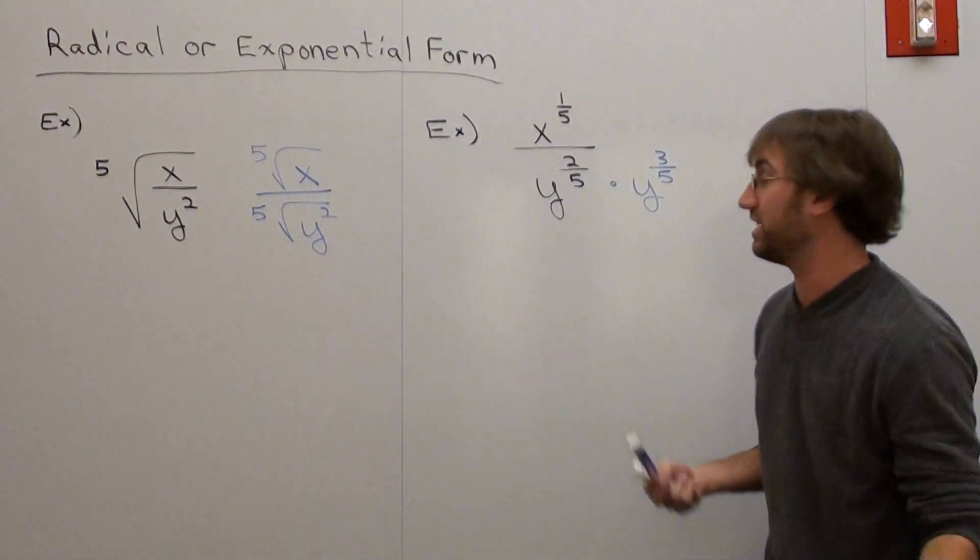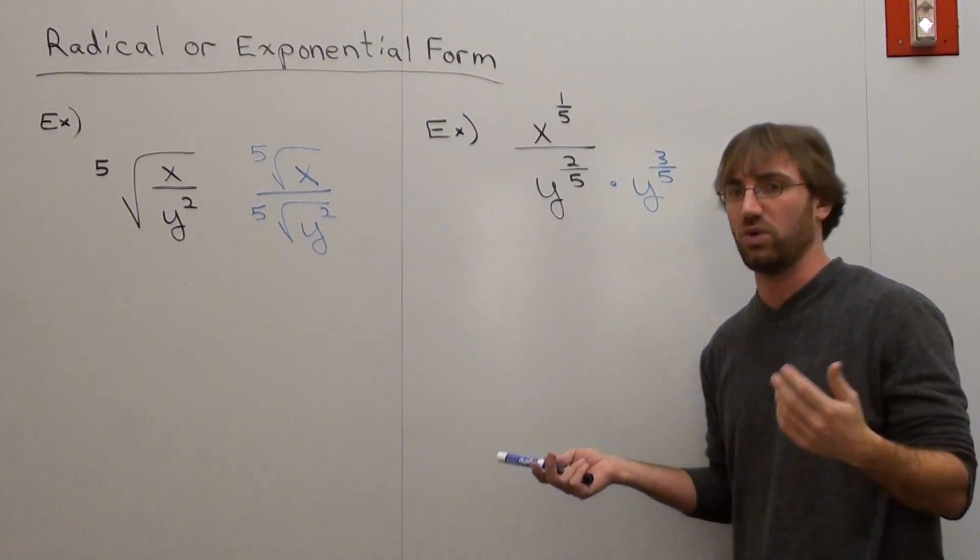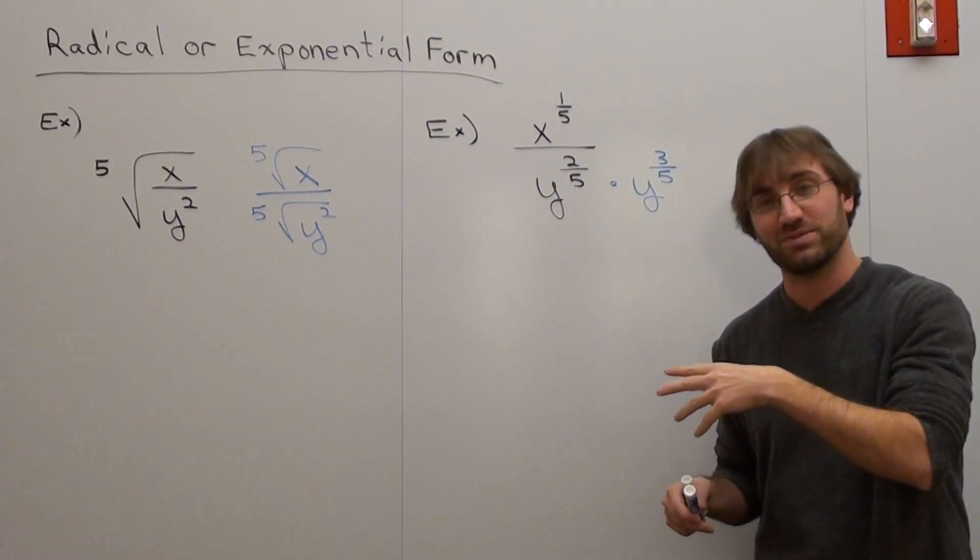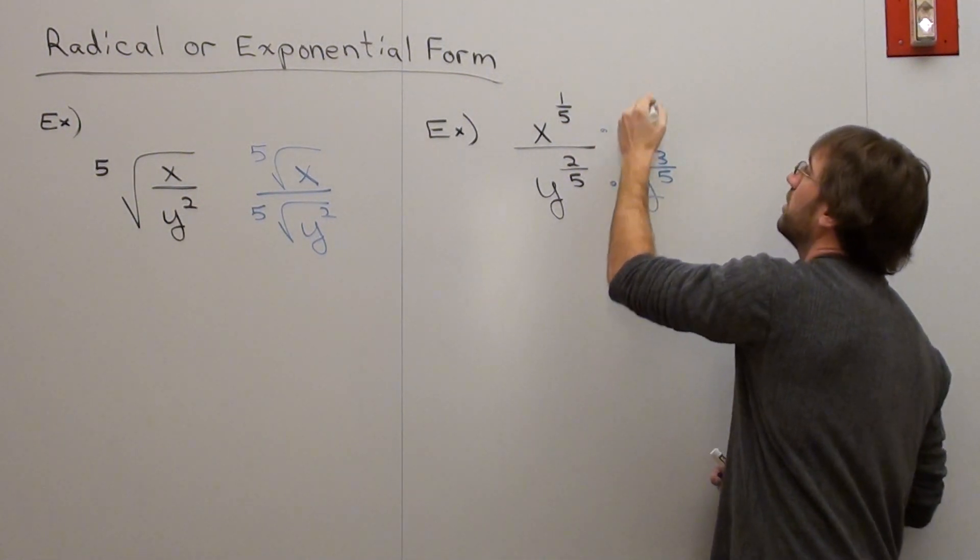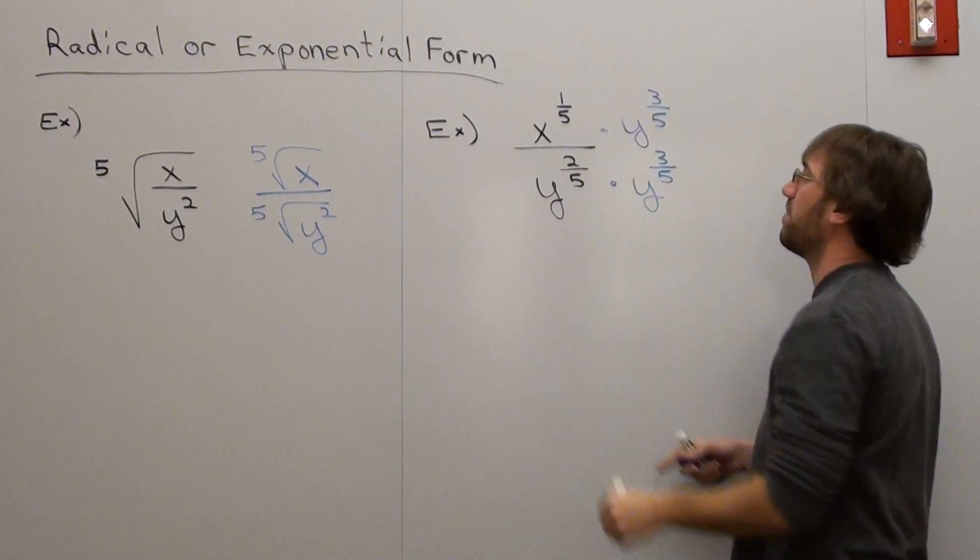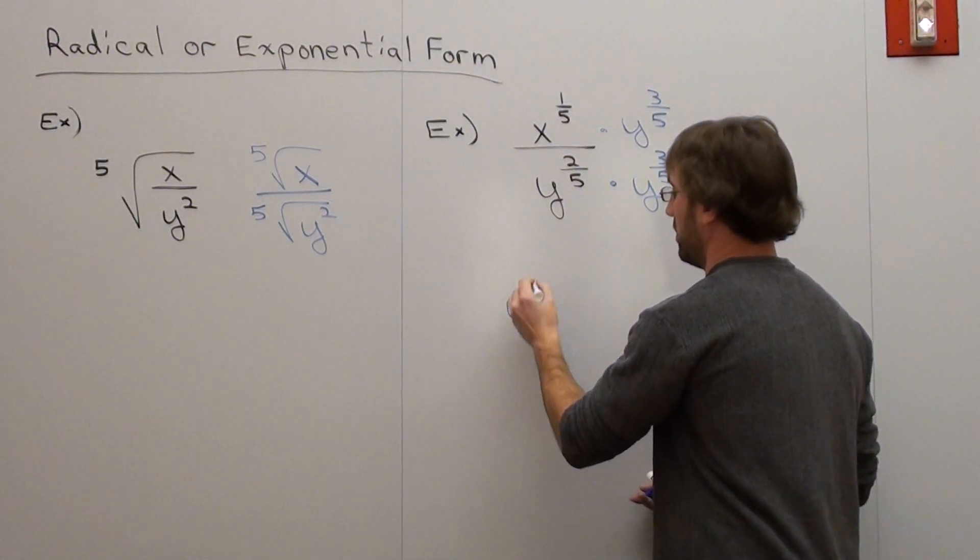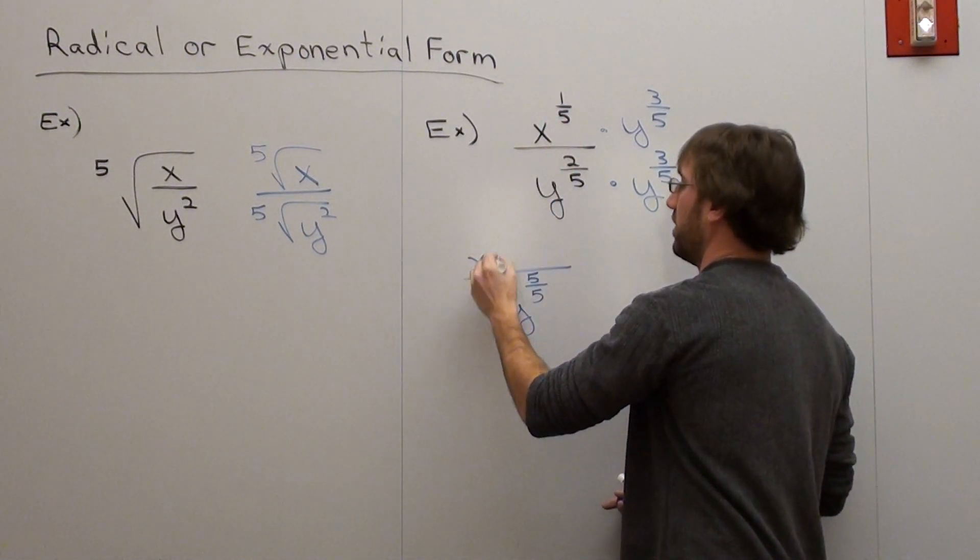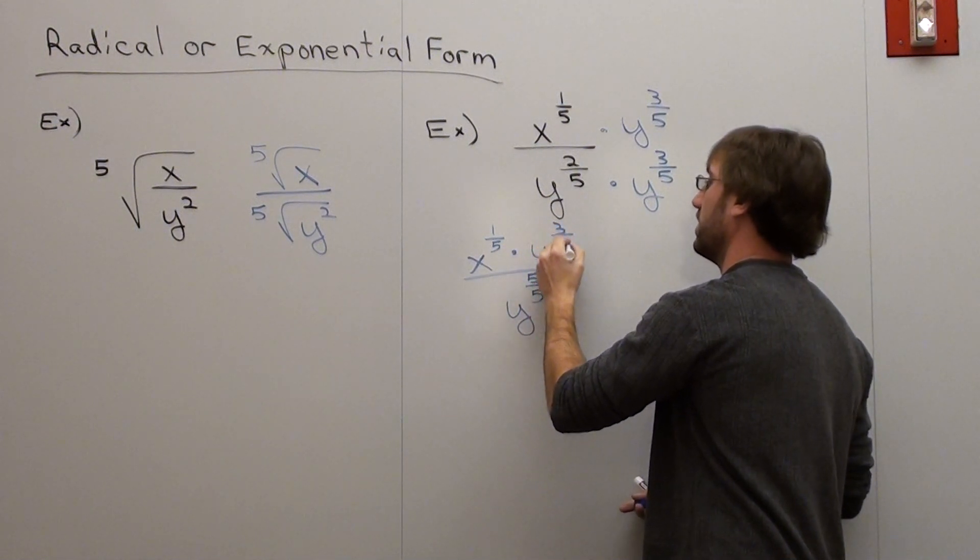But you can't just multiply the denominator by y to the three-fifths magically and hope that everything works out well. What you do on the bottom of an expression or the denominator of an expression, you have to do in the numerator of an expression. So I'm going to do that as well. Now, what happens is y to the two-fifths times y to the three-fifths is y to the five-fifths.